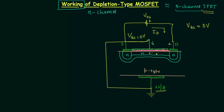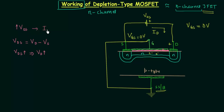On increasing voltage VDS, we are making the drain terminal more positive. Since VDS equals VD minus VS, increasing VDS means VD is increasing. More electrons are attracted towards the drain terminal, so the drain current ID will also increase. But after some time the drain current will become constant, and even if you increase VDS further, ID will remain the same.